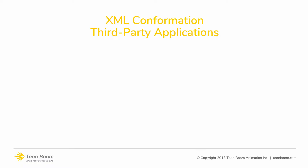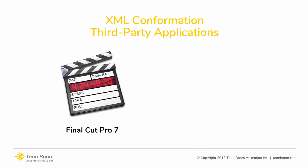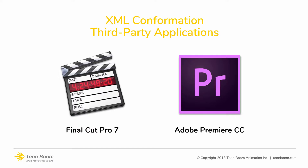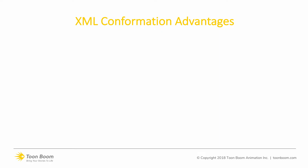First of all, let's see what applications support the XML format that is exported from Storyboard Pro. We have Final Cut Pro 7, which is an Apple software, and we have the Adobe Premiere software as well that will support the Final Cut Pro XML format. So what's the advantage of using the XML format for conforming your storyboard?